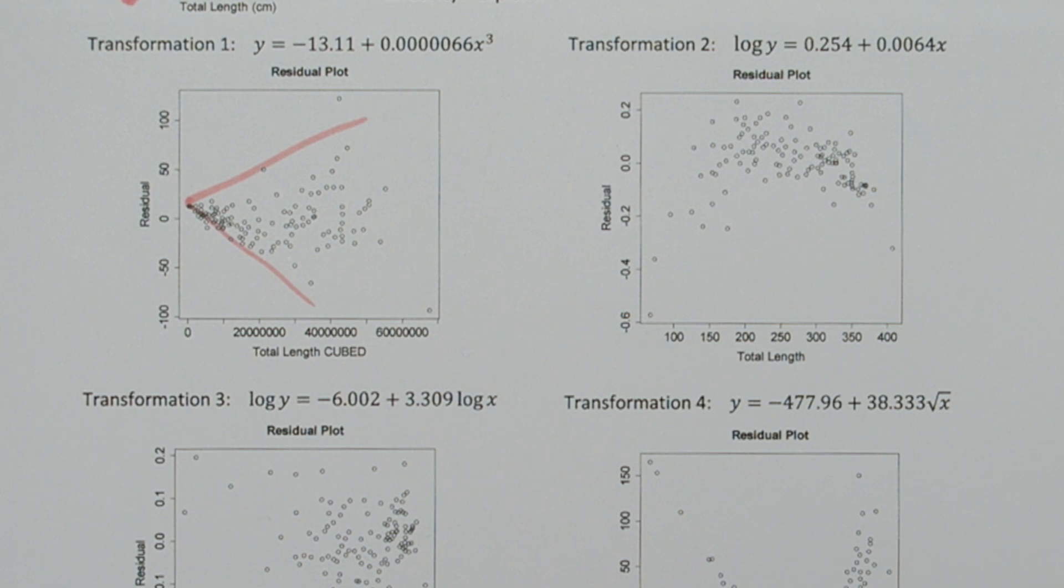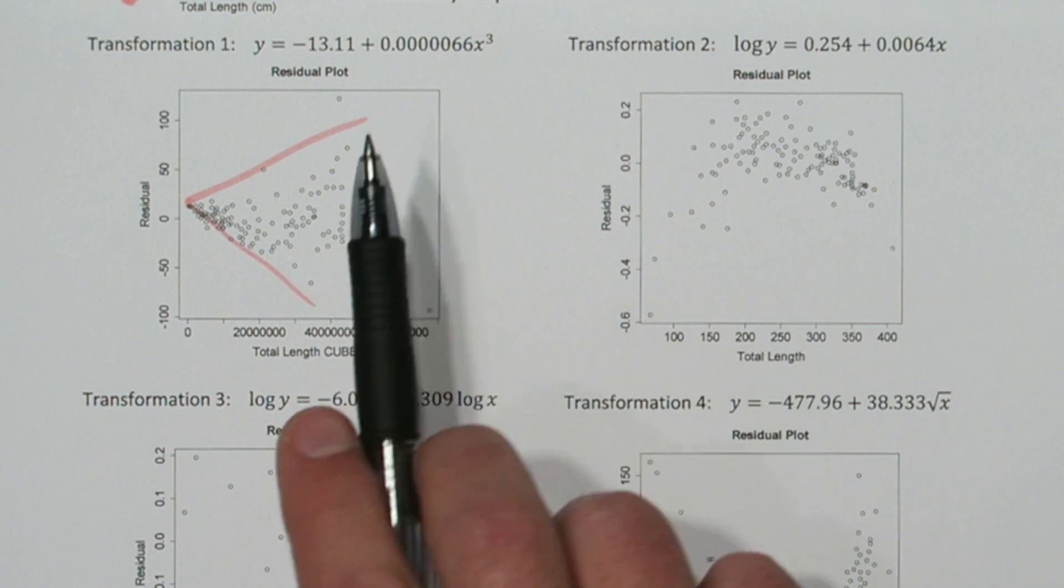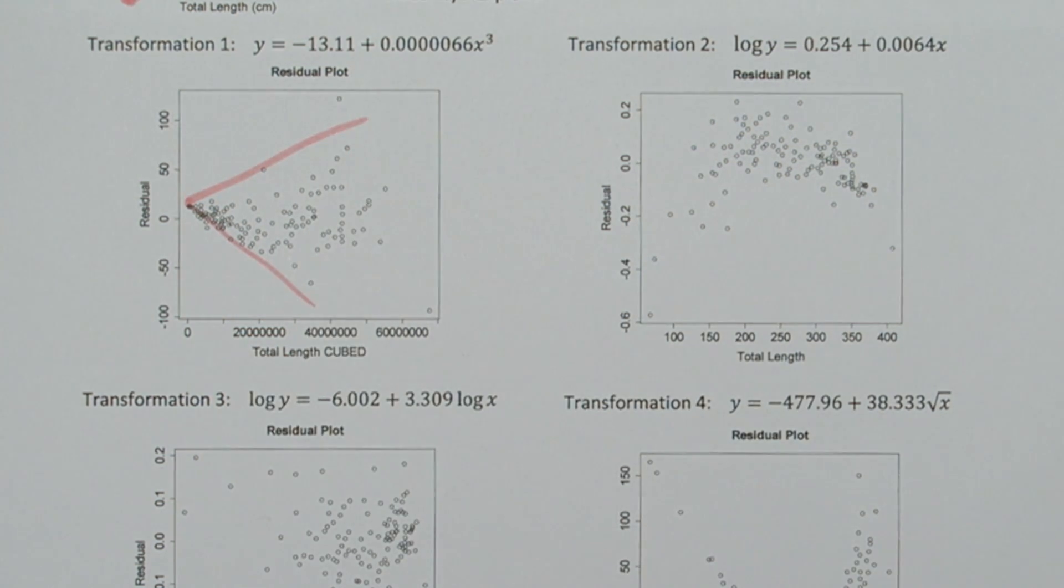That means for sharks with small total lengths, the model performs quite well. But as the shark lengths increase, the absolute value of the residuals increases. That means the model's not working as well. So transformation 1 did not achieve linearity.